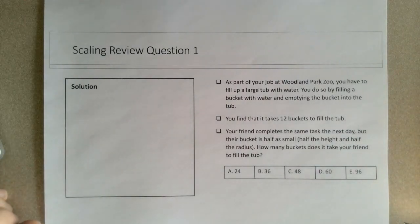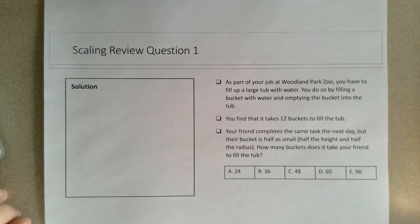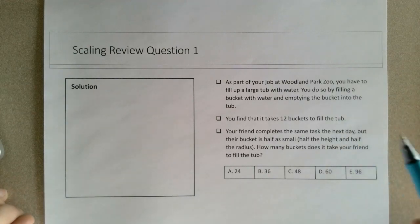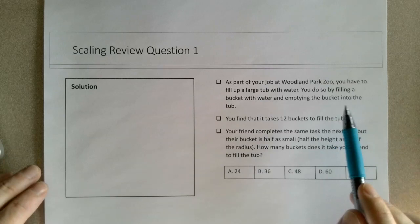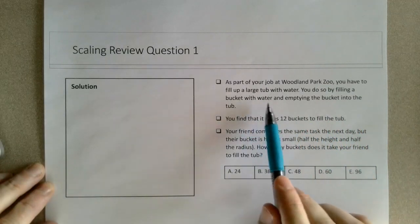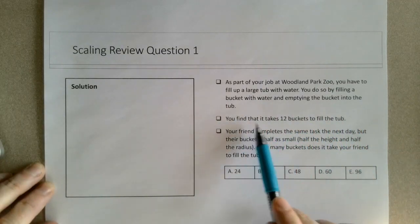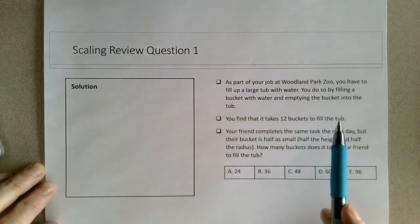Okay, so in this scaling question, the question is trying to address your understanding of how volume scales with linear dimension, set in the context of filling a large tub with water. So you're told that you have to fill this large tub by using a small bucket, and it ends up taking 12 of these buckets to fill the tub.